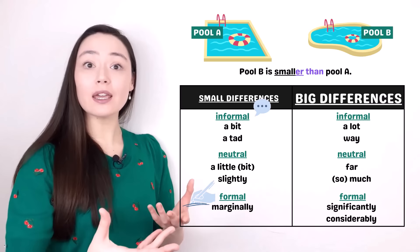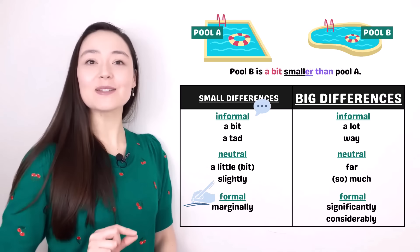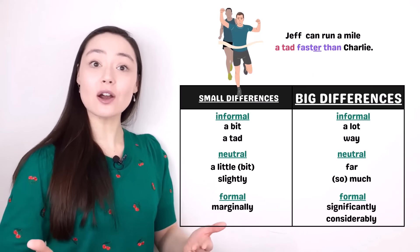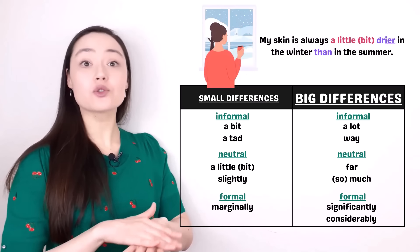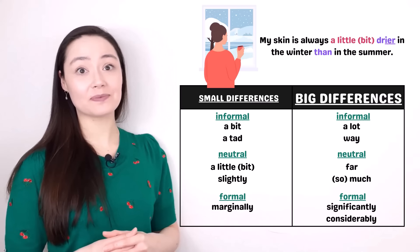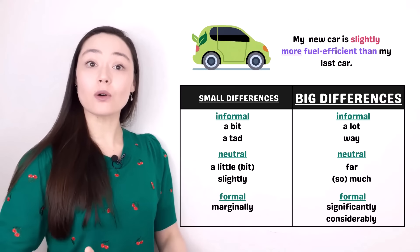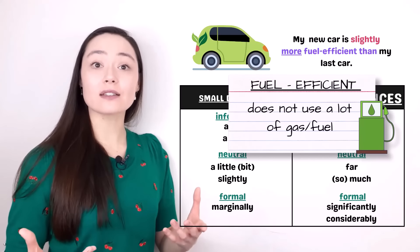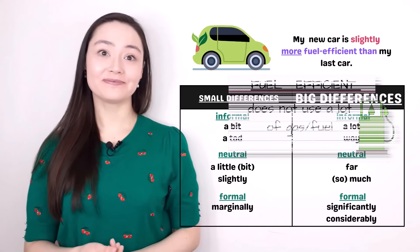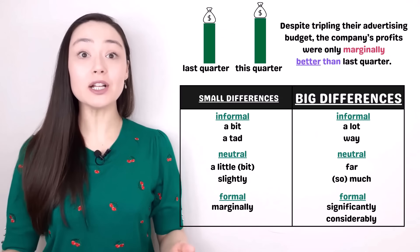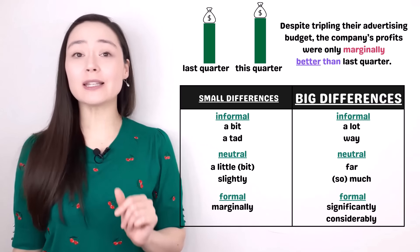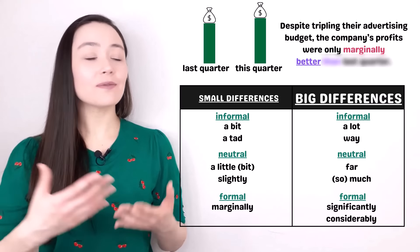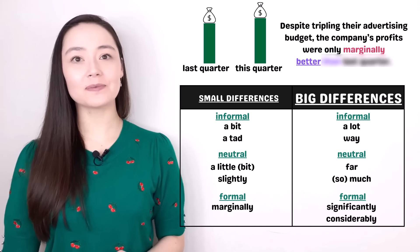Pool B is smaller than pool A — let's be more specific. Pool B is a bit smaller than pool A. Small difference. Jeff can run a mile a tad faster than Charlie. My skin is always a little drier in the winter than in the summer. My new car is slightly more fuel efficient than my last car. Fuel efficient means it doesn't use a lot of fuel or gas — small cars are normally more fuel efficient. Despite tripling their advertising budget, the company's profits were only marginally better than last quarter. You don't need to include 'than' plus the object if it's already clear — that's optional.